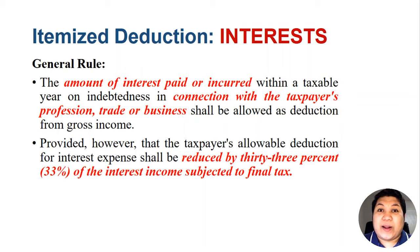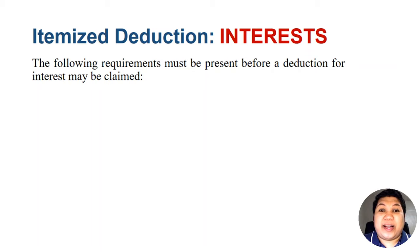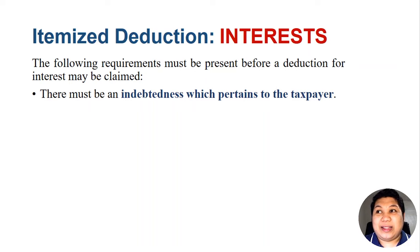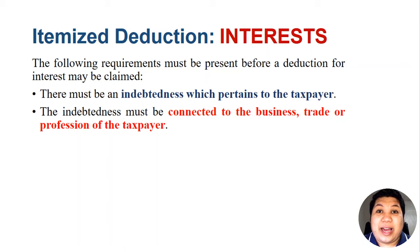The following requirements must be present before a deduction for interest may be claimed. First, there must be an indebtedness which pertains to the taxpayer. The indebtedness must be of the taxpayer and must be connected to the business, trade, or profession of the taxpayer. It is important to note that all expenses, whether interest or otherwise, must be related to the taxpayer's business, trade, or practice of profession before these items can be claimed against the gross income. There must also be a legal, enforceable liability to pay the interest.